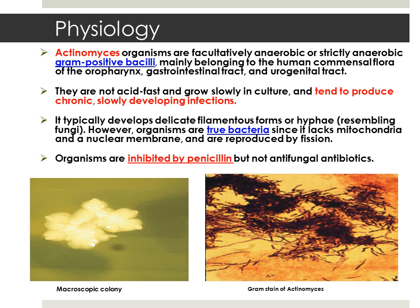Actinomyces species are normally present on the enamel of teeth, gums, tonsils, and the lining of the gastrointestinal and urogenital tract. As we can see from the macroscopic colony of Actinomyces on the left and the gram stain on the right, while individual bacteria are rod-shaped, Actinomyces colonies form fungus-like branching networks of hyphae. They were initially assumed to be fungus and acquired the name Actinomyces, meaning gray fungus in Greek.